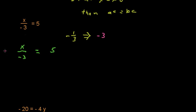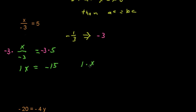we'll end up with 1x. That will be our goal on these problems when using the multiplication property of equality — we want to end up with just 1x. So negative 3 times x over negative 3 gives us just 1x on the left side of the equal sign. We multiply both sides by negative 3, and on the right side we get negative 15. Since 1 times x equals x, we have x equals negative 15.